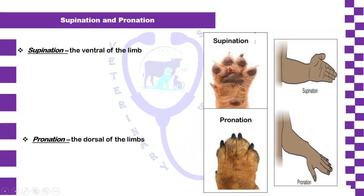Supination is the ventral part of a limb, as shown in the picture, whereas pronation is the dorsal part of a limb. Using the example of a human hand, the ventral side of the hand is called supination, whereas the dorsal part of the hand is called pronation.